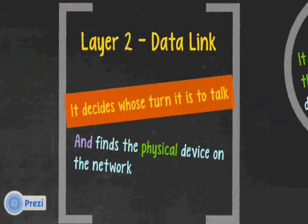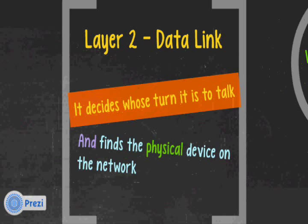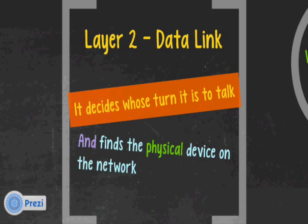Layer two, the data link layer, has two functions. First, it decides whose turn it is to talk — the technical term is bus arbitration. If multiple computers share a network, the data link layer uses different bus arbitration methods to decide who transmits. Second, it finds the physical device on the network. So layer three finds the network, and layer two finds the physical device on that network.